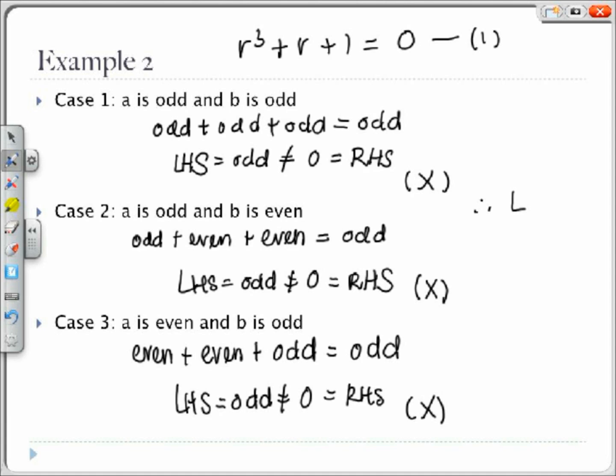Therefore we see that in all cases, 1, 2, and 3, the left hand side is odd and the right hand side is 0, which is a contradiction. So we see that there is no rational number r such that r cubed plus r plus 1 equals 0.